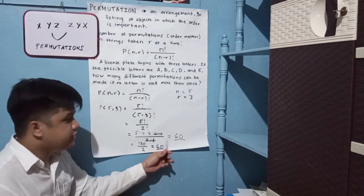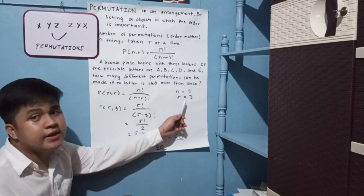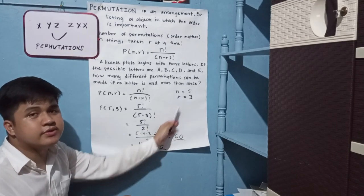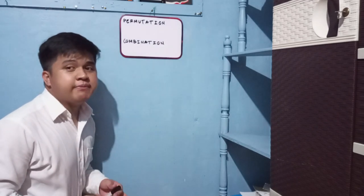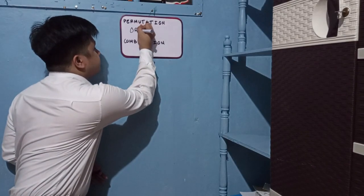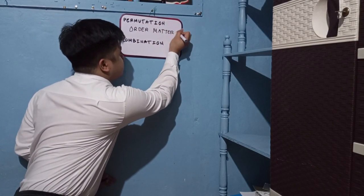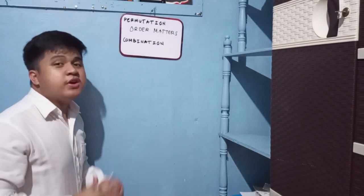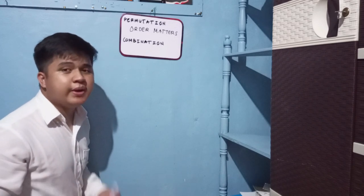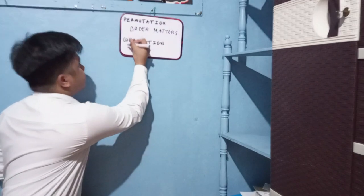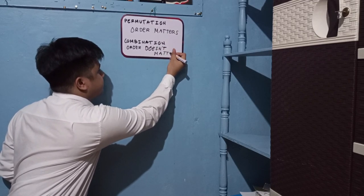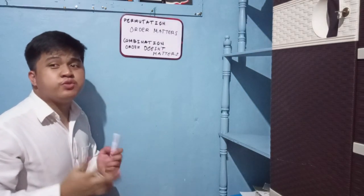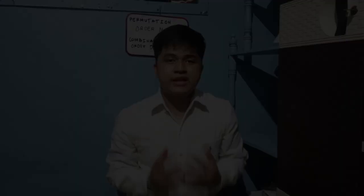Therefore, there are sixty ways we can make a permutation using three letters out of five given letters. To sum up: permutation mainly deals with the arrangement of a given set of items, therefore the order matters — the way you arrange it matters. On the other hand, combination deals with the selection of items from a group of items, therefore the order does not matter, because you just want to combine things. And that's all for my topic. Thank you for listening, and I hope you learned something.